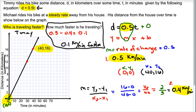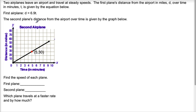So again, here we're given two different options. We're given the slope-intercept form of the equation — from that, very easily, we're able to extract the slope or the rate of change. And the second part, we're given the graph and we're able to find the rate of change from that. All right, so our second example.